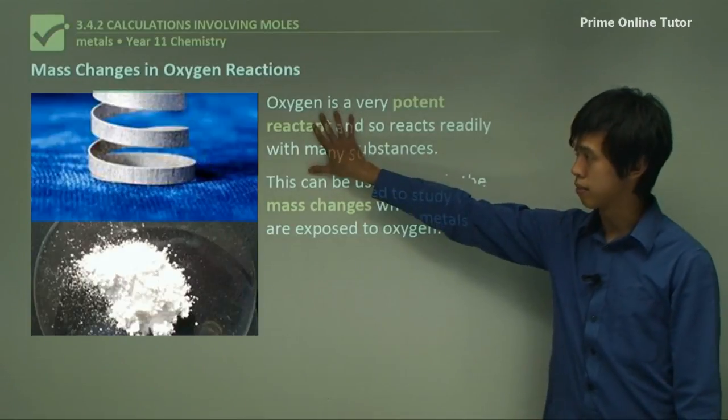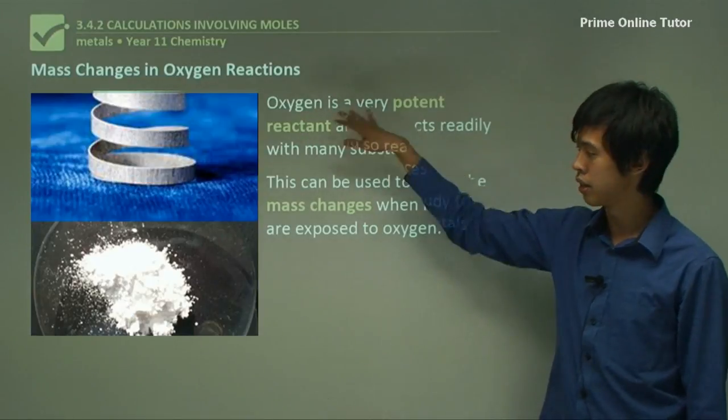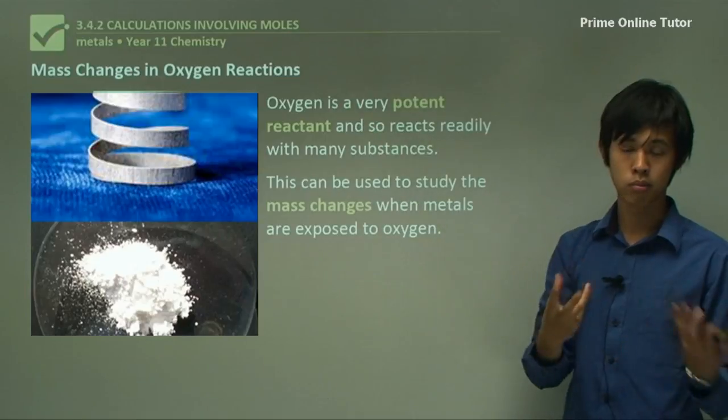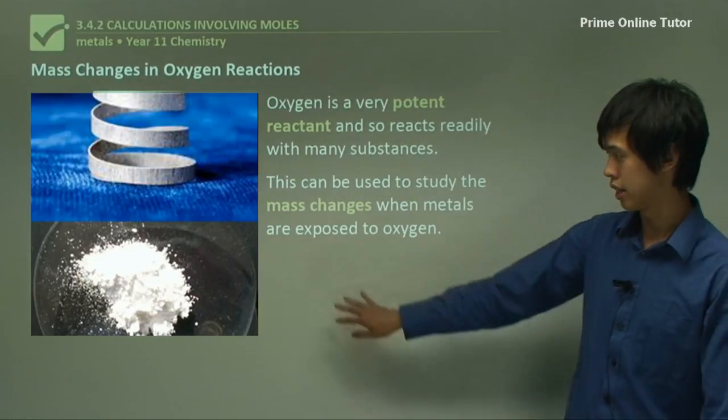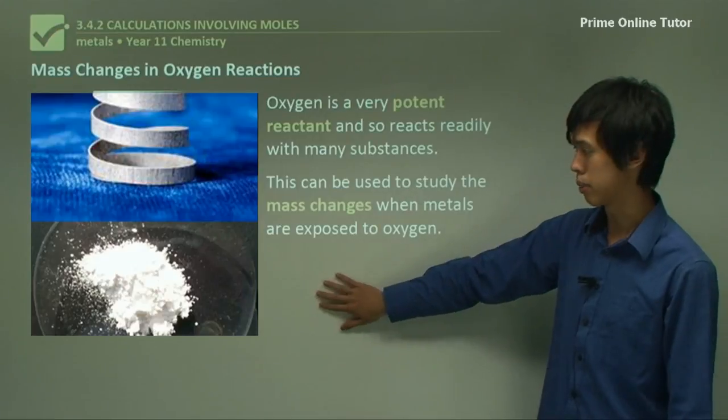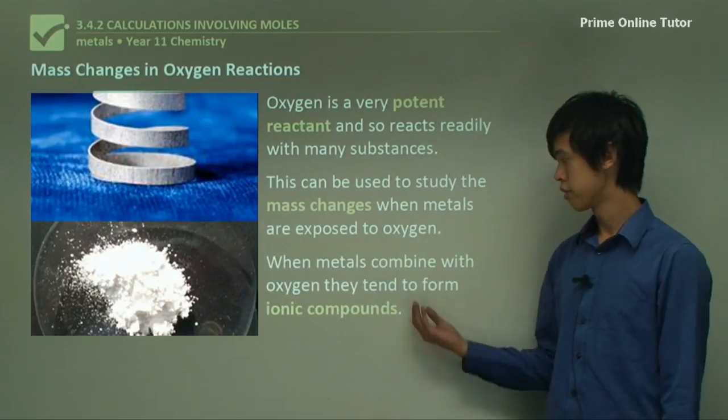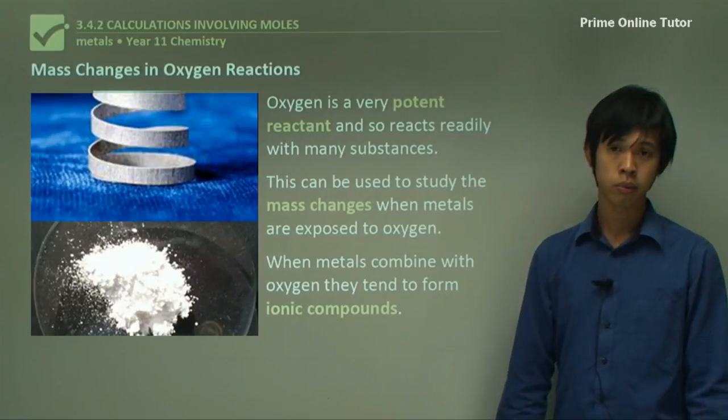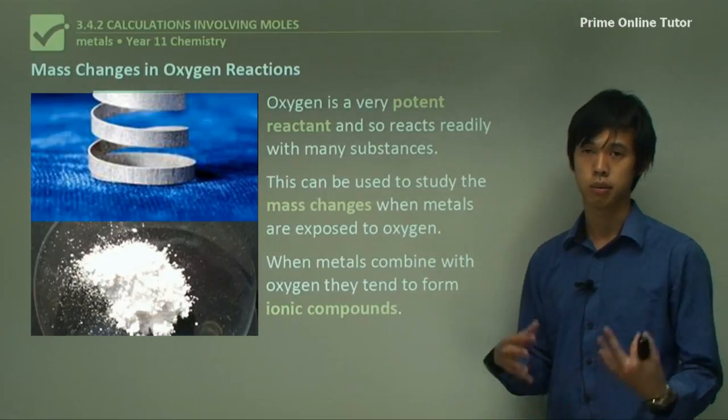Oxygen is a very potent reactant, and so it reacts readily with lots of different substances. This can be used to study the mass changes when metals are exposed to oxygen. So here we have magnesium strip. You should have seen magnesium strip in science at some point. And down here is when magnesium strip, or magnesium metal, reacts with oxygen. It forms magnesium oxide, and that's down here, this white powder. And you can see they're very different.